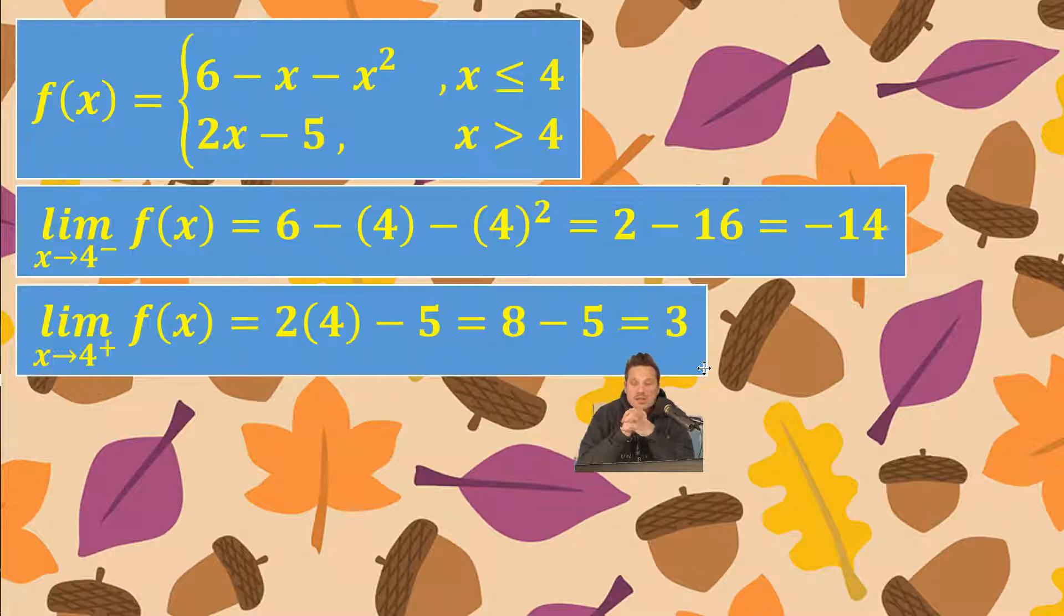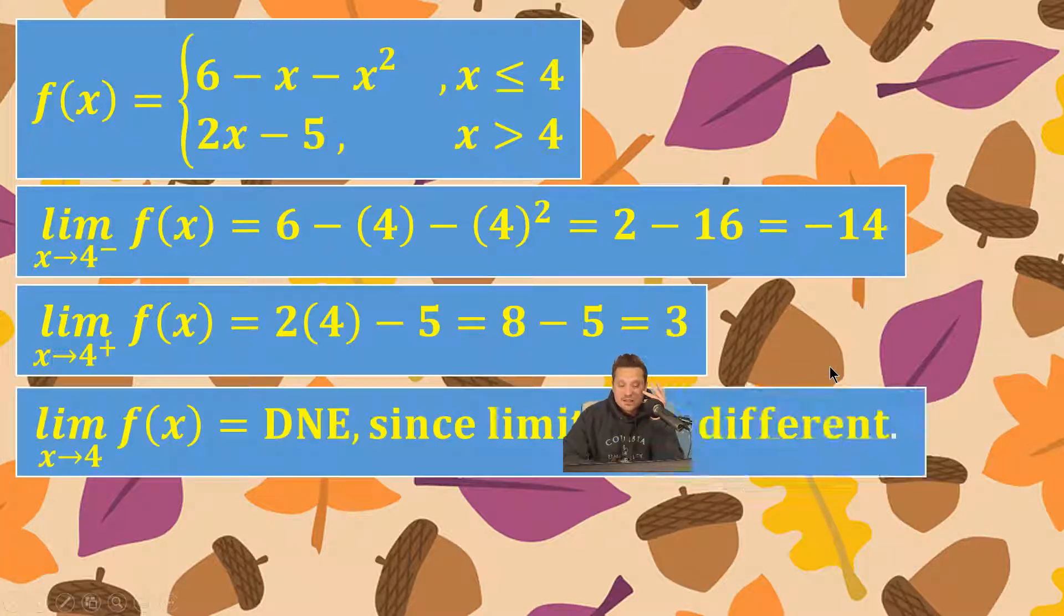Clearly negative 14 and 3 are two very different values. So what is that telling you about the limit of f of x as x approaches 4? It's telling you that this limit does not exist.